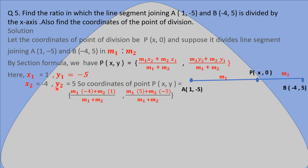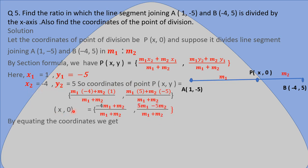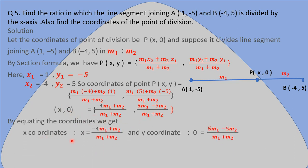Here we are putting the values of x1, y1, x2, and y2. So we get x = (-4M1 + M2) / (M1 + M2) and y = (5M1 - 5M2) / (M1 + M2). The coordinate of point P is (x, 0), so we equate the x-component with x and the y-component with 0.